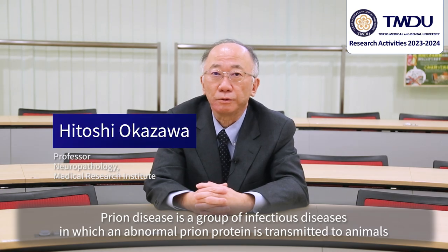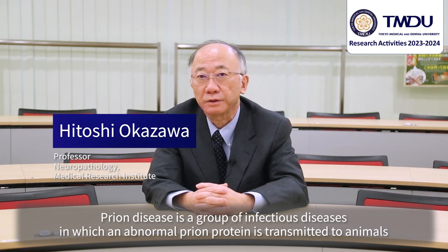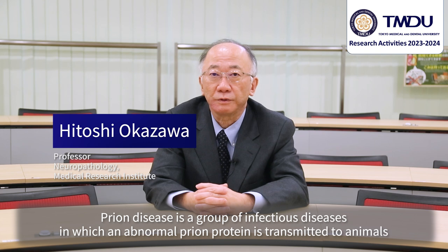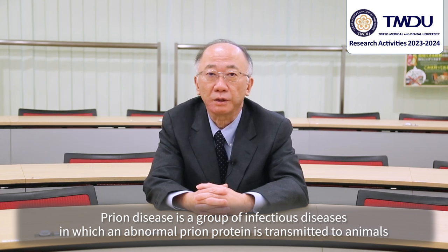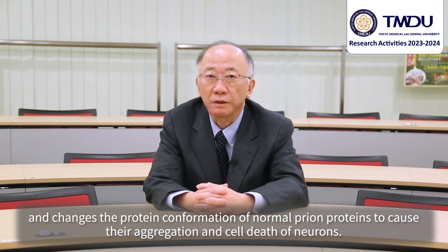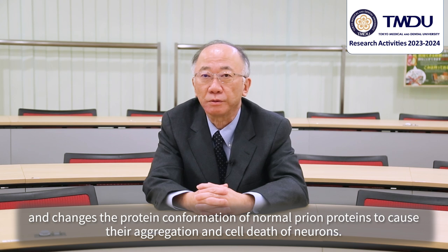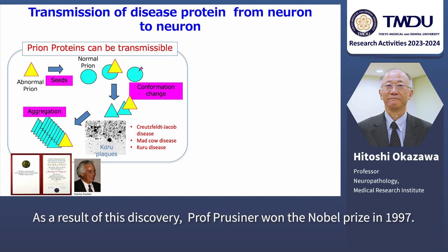Prion disease is a group of infectious diseases in which an abnormal prion protein is transmitted to animals and changes the protein conformation of normal prion proteins to cause their aggregation and cell death of neurons. As a result of this discovery, Professor Prusiner won the Nobel Prize in 1997.